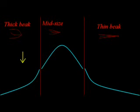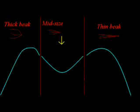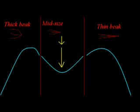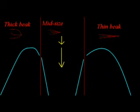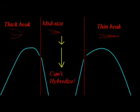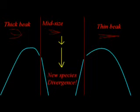To get speciation, pressure must be placed ONLY on the middle ground — this is called disruptive selection. Let's say we have a localized drought such that longer beaks are preferred in one area and shorter, stronger beaks are preferred in another. This allows both extremes of beak length to live, and by selecting against the mid-length beaks, the variants are pushed apart from one another. Eventually they get so pushed apart that they can no longer hybridize. That is speciation.